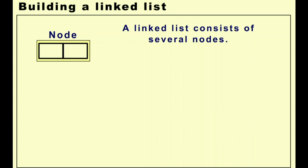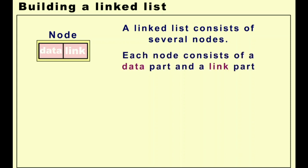A linked list consists of several nodes connected with each other — similar to a train where every node is connected. Each linked list node contains two parts: the first part stores data, and the second part is a link to the next linked list node.